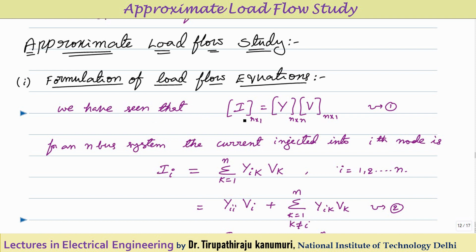We have seen in our previous lectures that the current matrix can be written as the product of the admittance matrix multiplied by the voltage matrix. For an n-bus system, the current matrix will have n rows and one column, Y will be an n×n matrix, and V will be an n×1 matrix. For the ith node, Ii equals sigma k=1 to n of Yik into Vk.